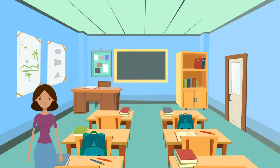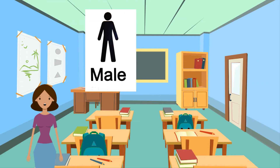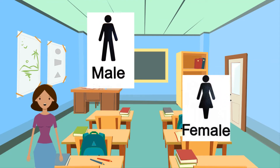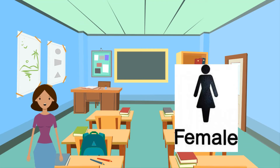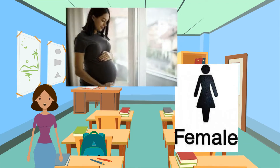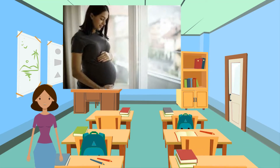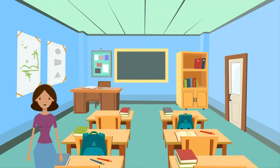A balanced diet will differ for each individual, depending on age, sex, and even lifestyle. Males might need more carbohydrates and proteins due to their generally higher muscle mass. Females might need more iron during their menstruation periods. Pregnant women might need much more of all nutrients to supply enough for the growing baby. An athlete will need more energy nutrients than an office worker, and a young teenage boy will need more energy nutrients than a senior citizen.